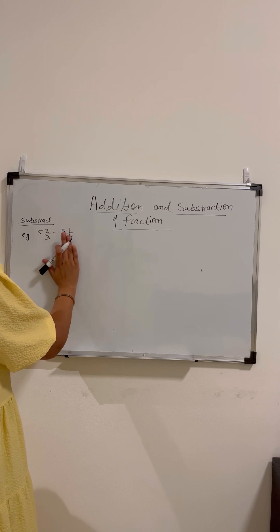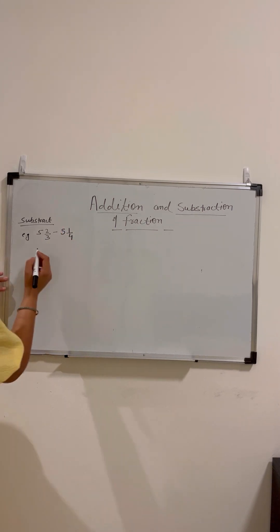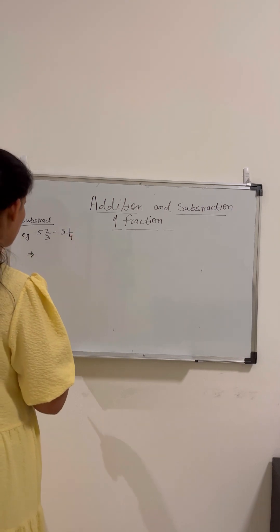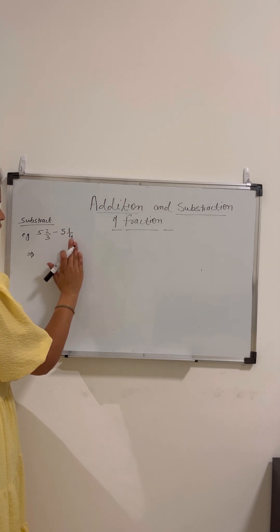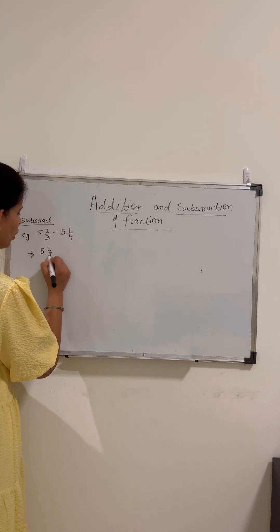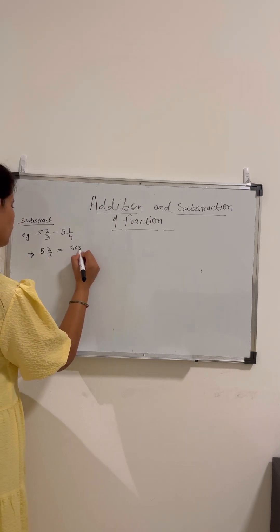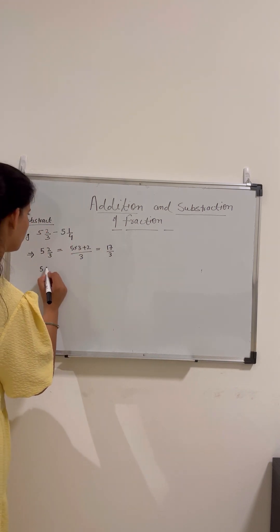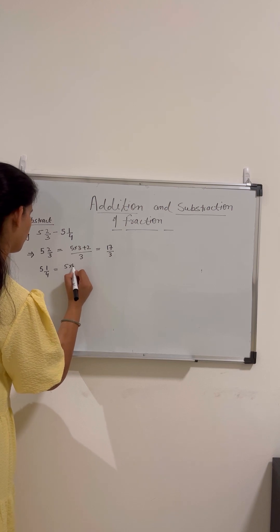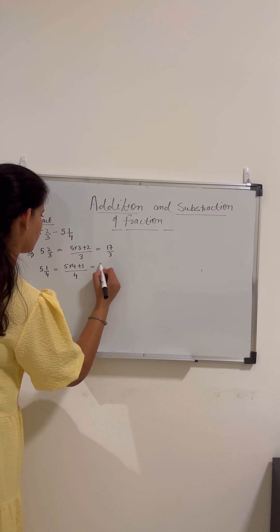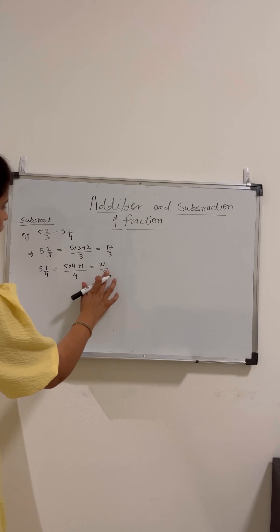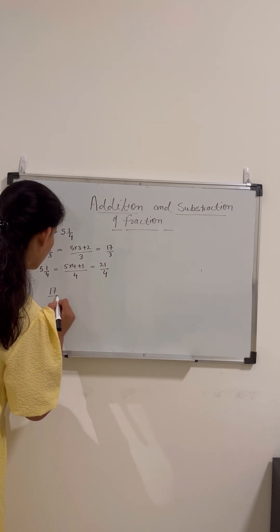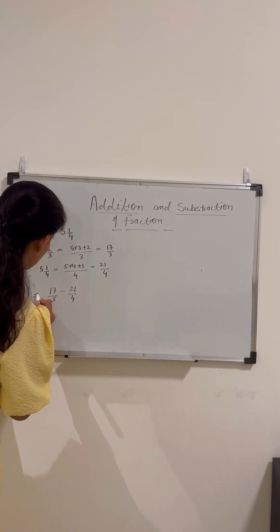Now we will subtract 5 and 1 by 4 from 5 and 2 by 3. To solve this, we first convert both mixed fractions into improper fractions. 5 and 2 by 3 becomes 17 by 3. And 5 and 1 by 4 becomes 21 by 4. So we need to compute 17 by 3 minus 21 by 4.